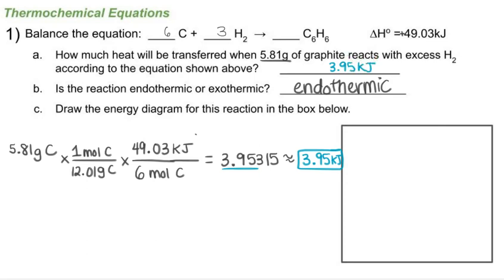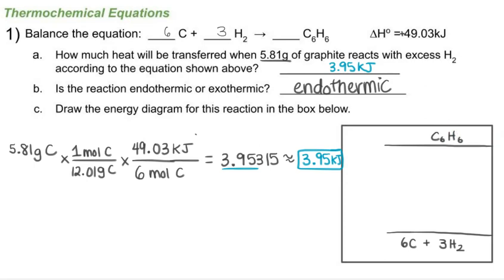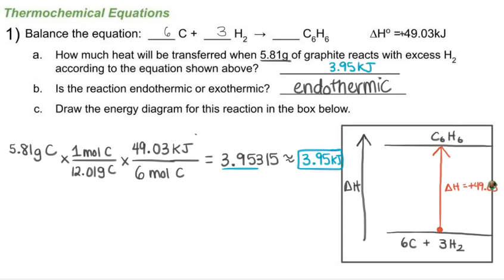For part C, I'll draw the energy diagram. Since this is an endothermic reaction, the reactants — six carbon and three H₂ — are at the bottom, and the products — one C₆H₆ — are at a higher energy. On the y-axis we put enthalpy (delta H). I'll draw an arrow pointing up to show energy is absorbed, with delta H = +49.03 kilojoules.